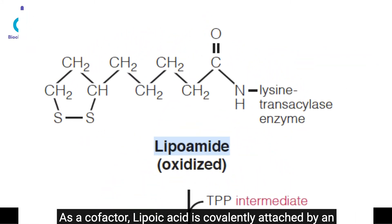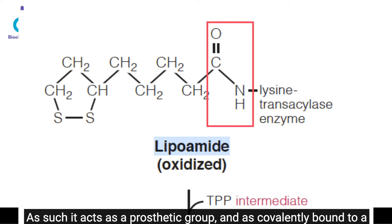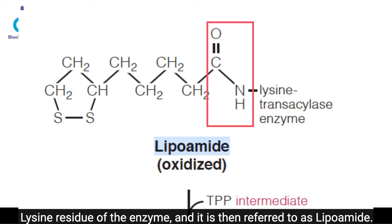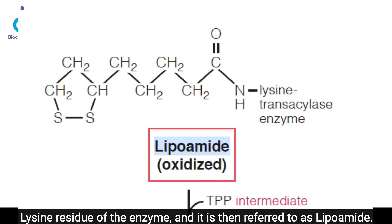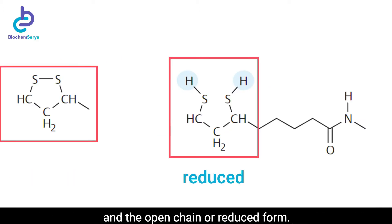As a cofactor, lipoic acid is covalently attached by an amide bond to a terminal lysine residue via the epsilon-amino group of lysine, as epsilon-aminolipo-L-lysine. It acts as a prosthetic group, covalently bound to a lysine residue of the enzyme, and is then referred to as lipoamide. It exists in two forms: the cyclic or oxidized form, and the open-chain or reduced form.